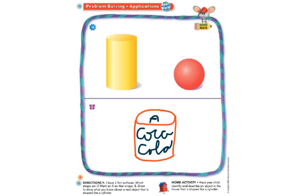To finish up and wrap up our lesson, remember that a cylinder has two flat surfaces and a curved surface. Thank you for watching. If you'd like, you can go around your house and see what you can find that is shaped like a cylinder. You can try to stack them and roll them to see what happens. Thanks for watching.